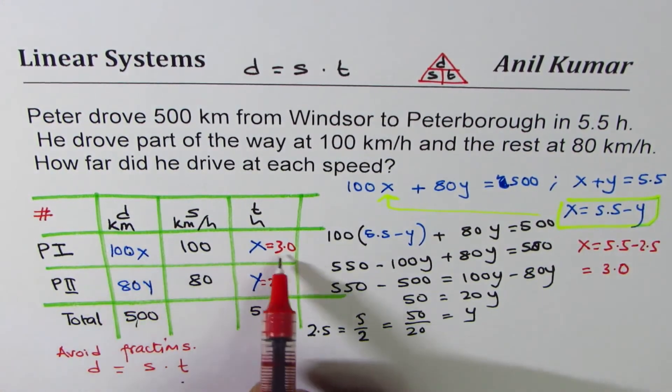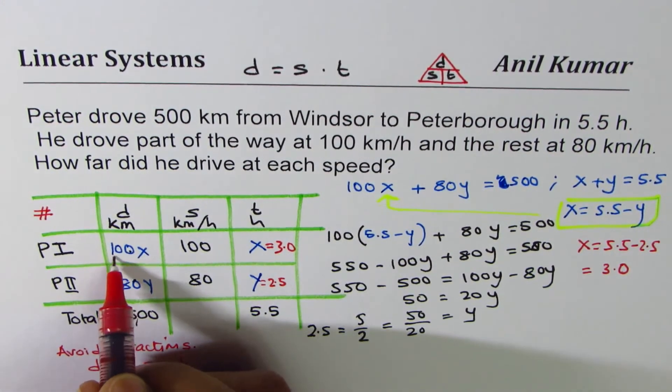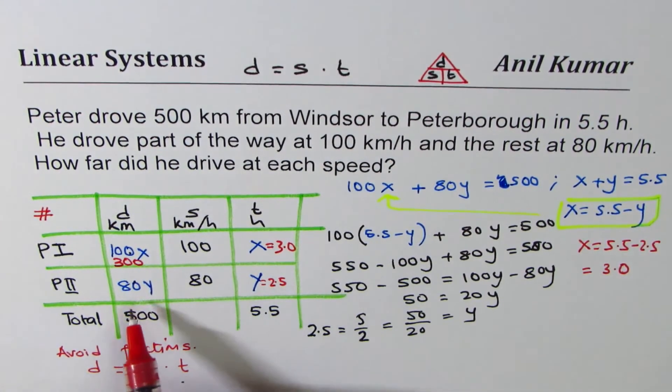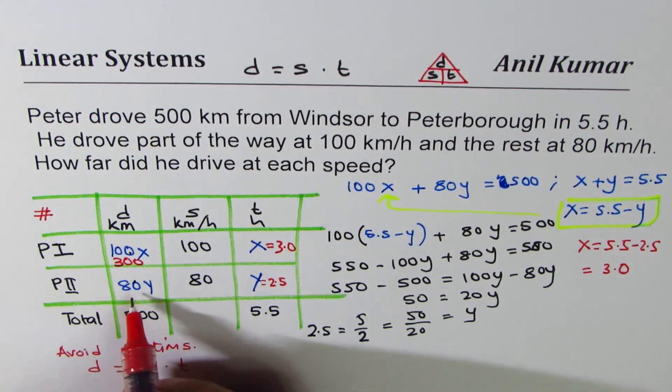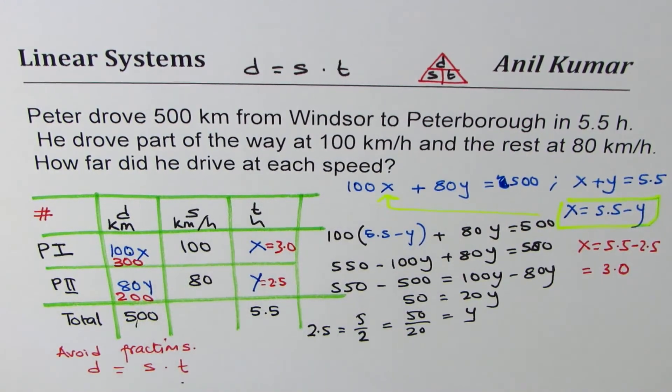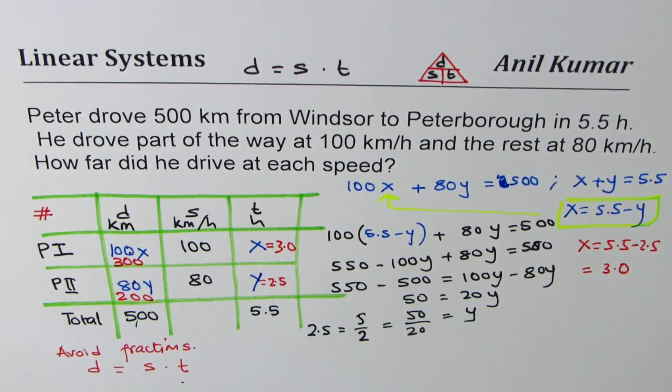The distance will be: multiplied by 3 will give us 300. 2 and a half: half is 40, 2 times is 160, which will give us 200. When you add them up you get 500.